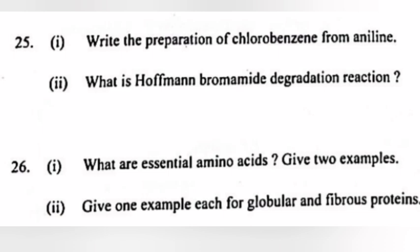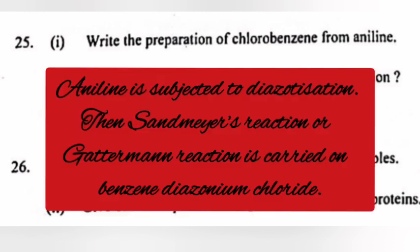Question 25, Part 1: Write the preparation of chlorobenzene from aniline. Answer: Aniline is subjected to diazotization, then Sandmeyer's reaction or Gattermann's reaction is carried on benzene diazonium chloride.